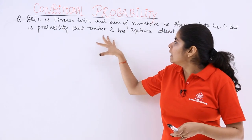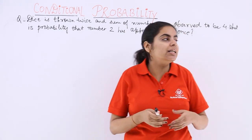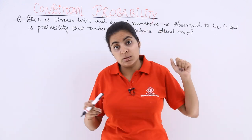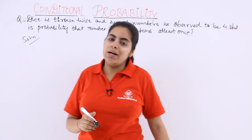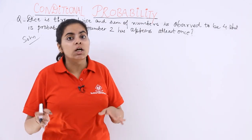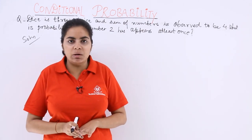What is probability that the number two has appeared at least once? So this is a question which involves the knowledge of a dice. So one dice, six possible outcomes. Two dice, 36 possible outcomes that you know.